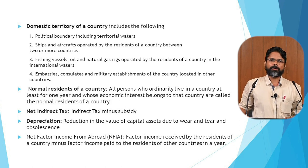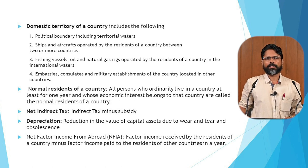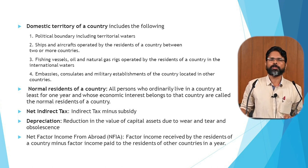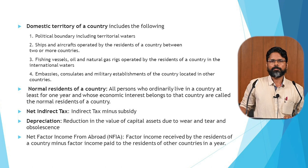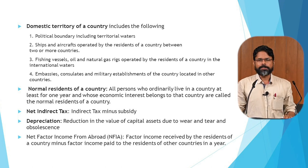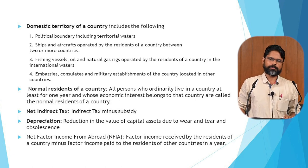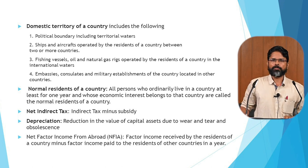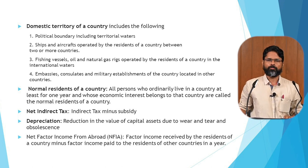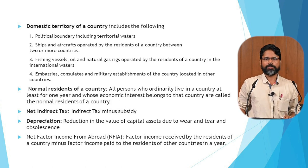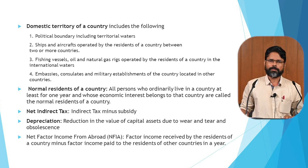The domestic territory of the country contains mainly four elements. First, the area within the political boundaries of the country. Second, the ships and aircraft operated by the residents of the country in any other countries of the world. Third, fishing vessels, oil and gas rigs in international waters. Fourth, embassies, consulates and military establishments in any other countries. These are the four elements of the domestic territory.